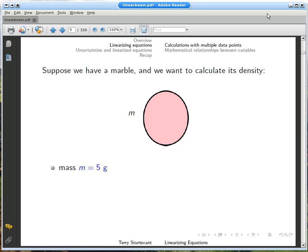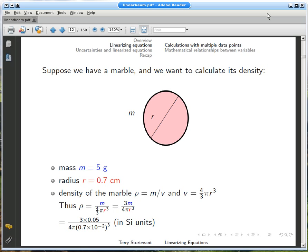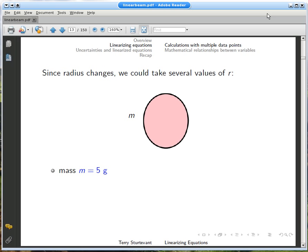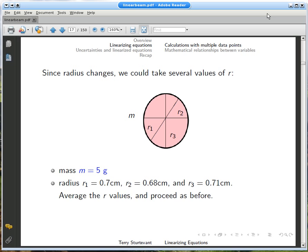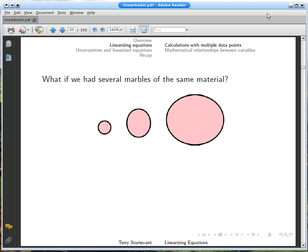Suppose we want to calculate the density of a marble. We need the mass and the radius. If the radius varies, we could measure it in several places and use the average. If we had several marbles of the same material, we could average both mass and radius to calculate density.